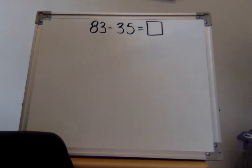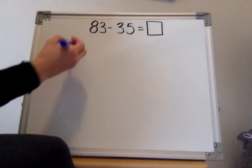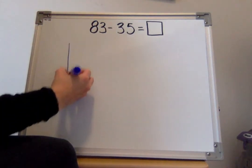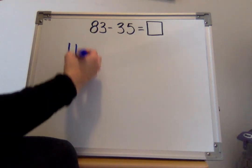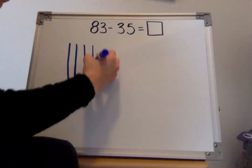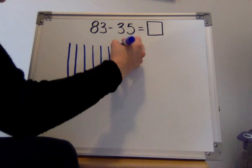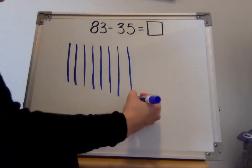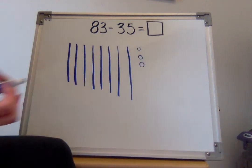When we subtract, we always start with the, yep, some people said total, some people said biggest number. So I need to start by drawing 83. 10, 12, 20, 30, 40, 50, 60, 70, 80, 81, 82, 83.